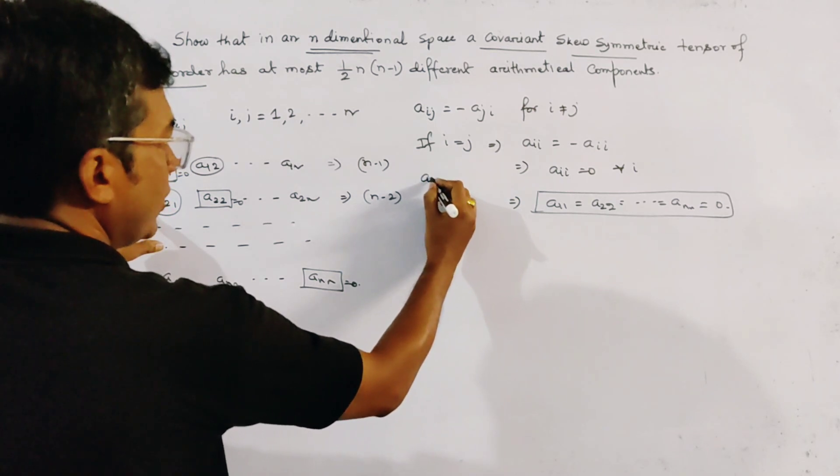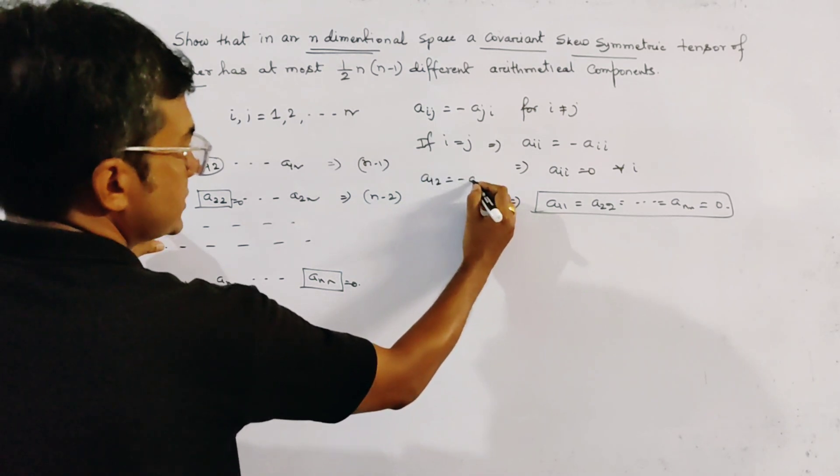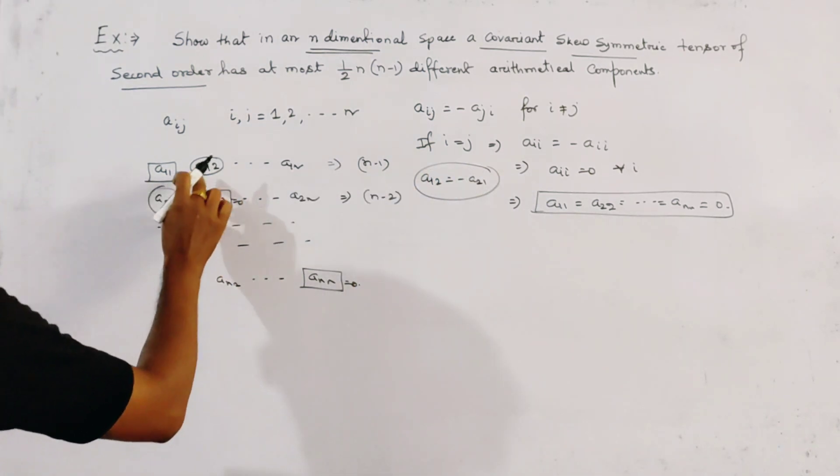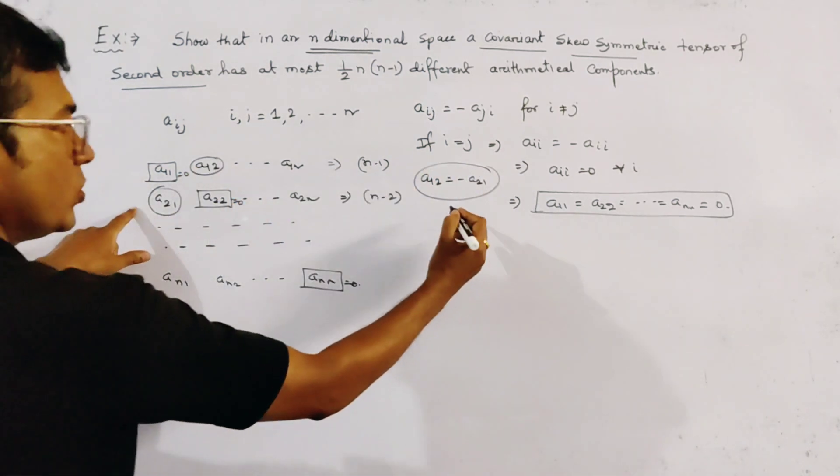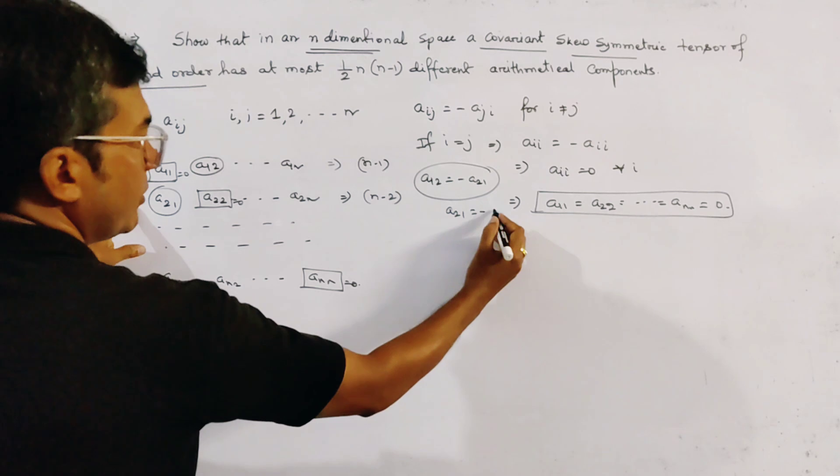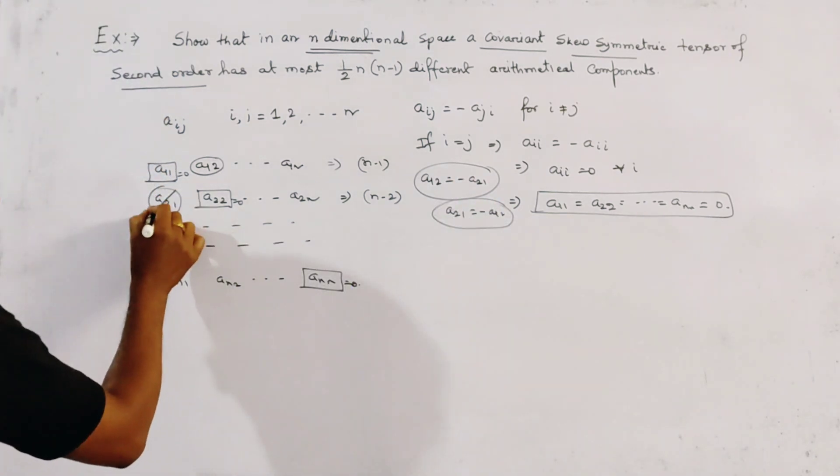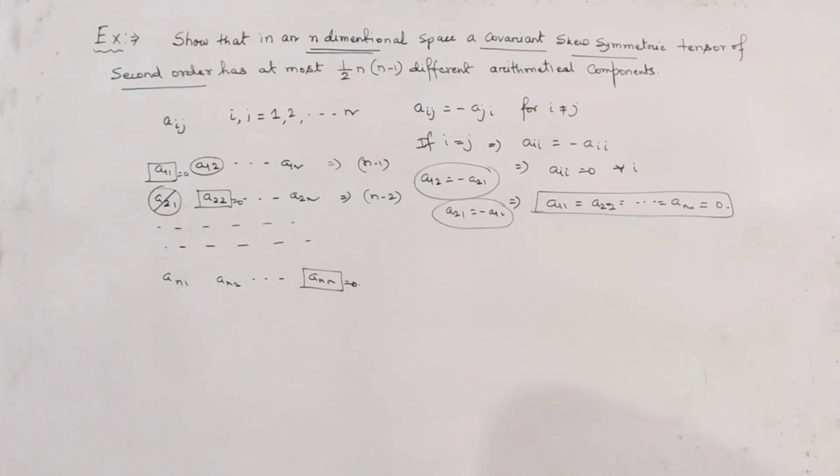Since a_12 equals minus a_21, so a_21 is not different from a_12. a_21 is nothing but minus a_12. So this is not different, so we cancel to count this quantity.